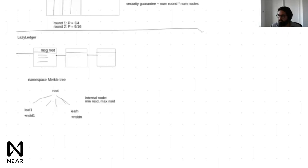In some ways building on lazy ledger is easier: you don't have to worry about timing as much for fraud proofs, or about building an interpreter and gas limits. In terms of bootstrapping, every Cosmos zone needs its own validator set and security guarantees. With lazy ledger you don't need a large validator set — you just need some simple way of deciding a leader for the next block of the virtual sidechain.